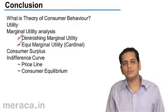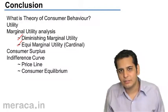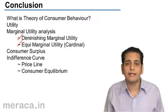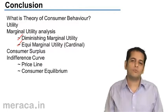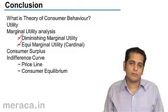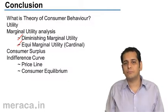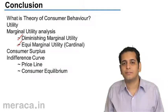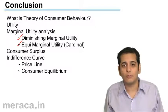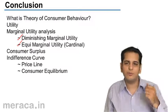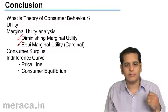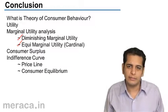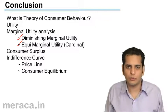Then we did equi-marginal utility. In equi-marginal utility, we studied that when the consumer has two or more products and has an income to spend on them, how does he decide how much income to spend on which product? There is a principle which helps him allocate his income over various goods: MU_a / P_a = MU_b / P_b = MU_c / P_c, for however many goods he wants to spend on.